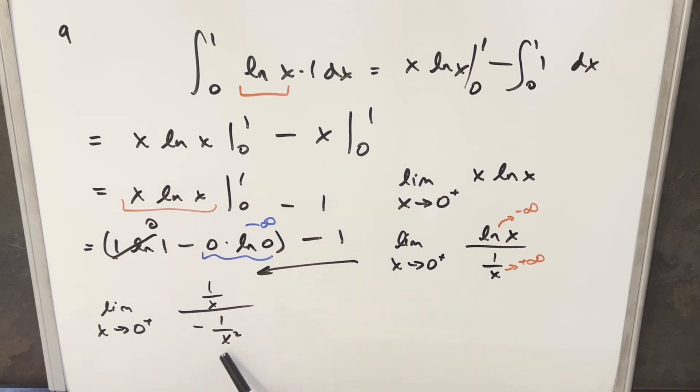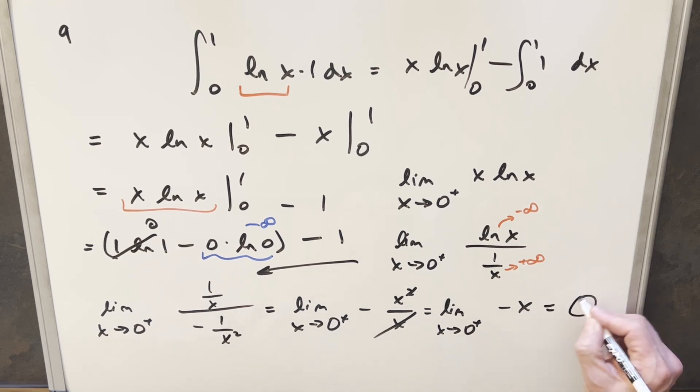But we can rearrange this and rewrite it. If I flip this and bring the x squared into the numerator and write it as x squared over x, then we get some cancellation. Now we're evaluating the limit as x approaches zero plus of just minus x. But minus x is just continuous. We've got no problems now. So we can just plug in our zero. The limit as x approaches zero of minus x is just going to be zero.